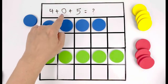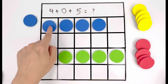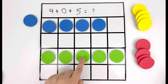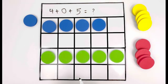So four plus zero plus five is one, two, three, four, five, six, seven, eight, nine. It equals nine.